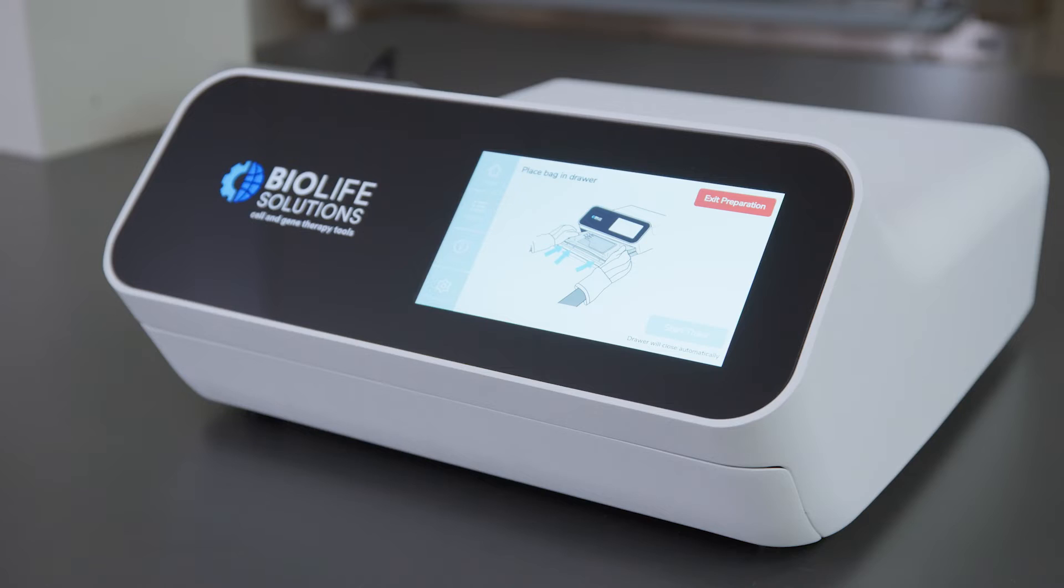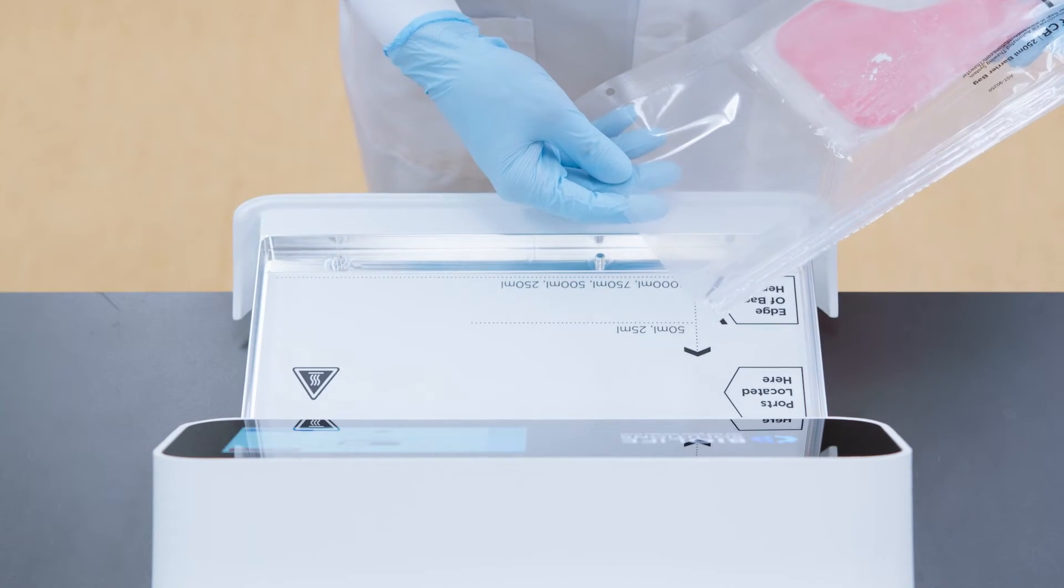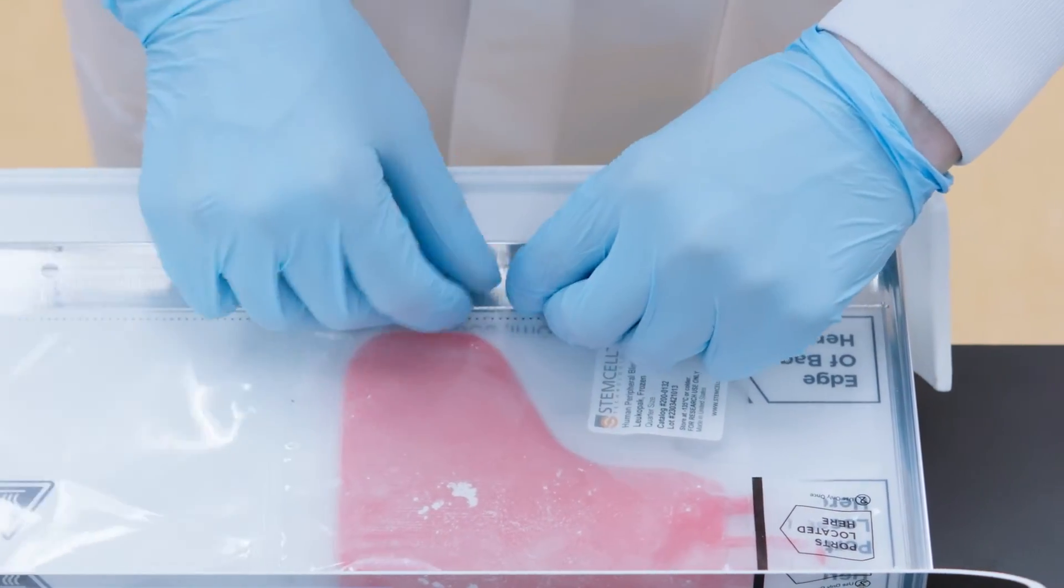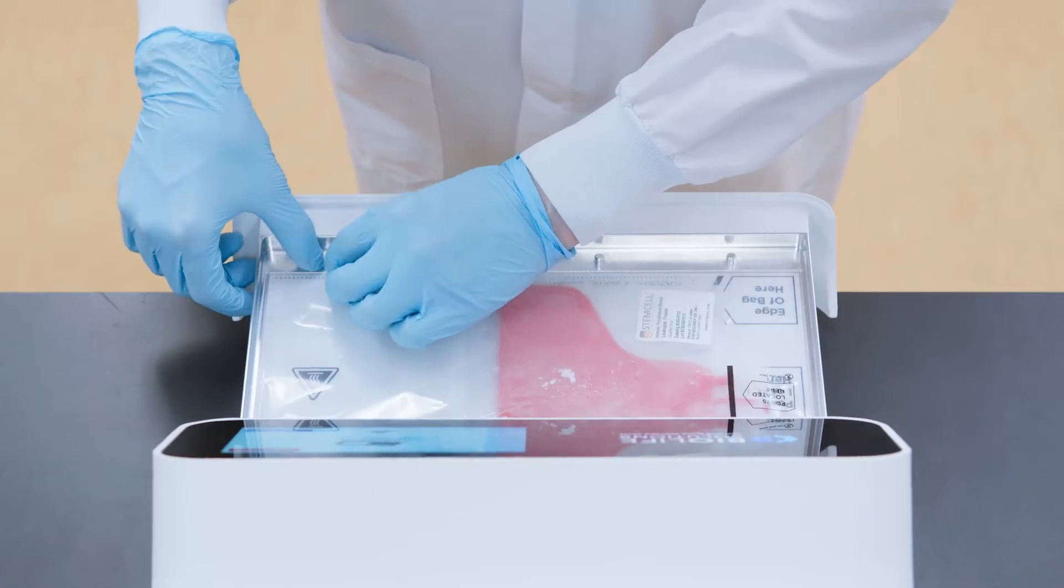When the instrument drawer opens, place the Thawstar CB barrier bag containing the frozen Leukopax into the drawer. Align the barrier bag's registration holes with the drawer guide pins to ensure correct positioning.